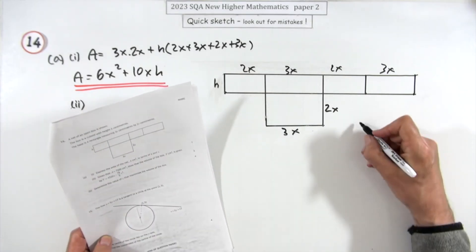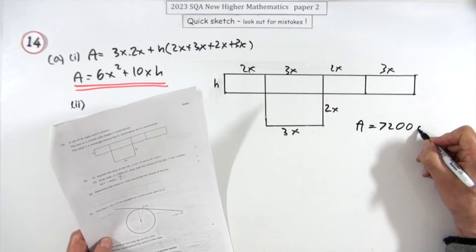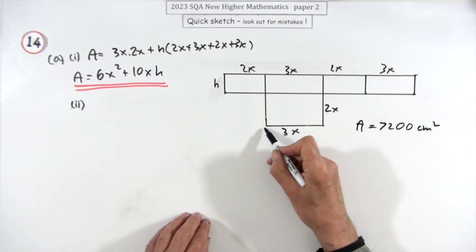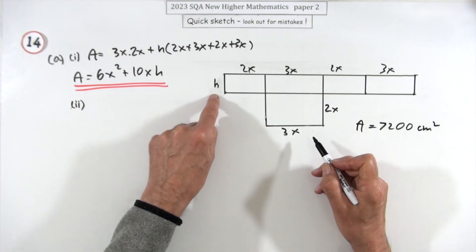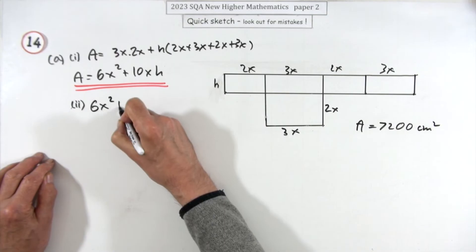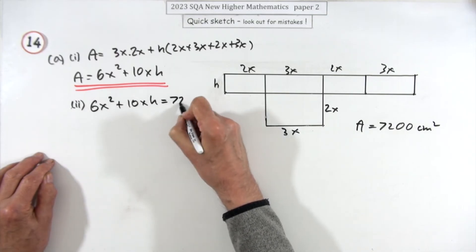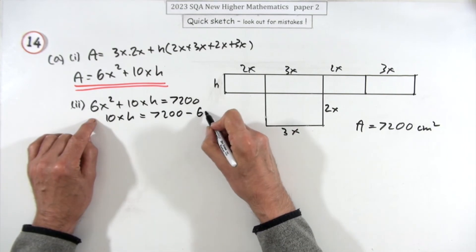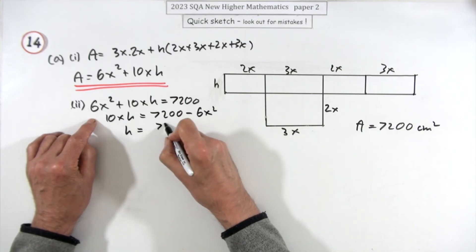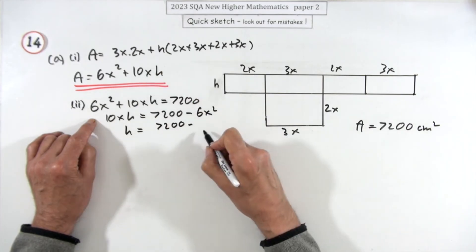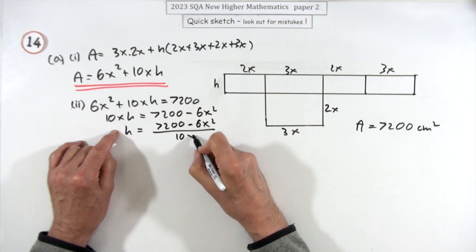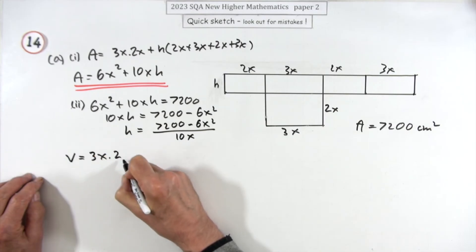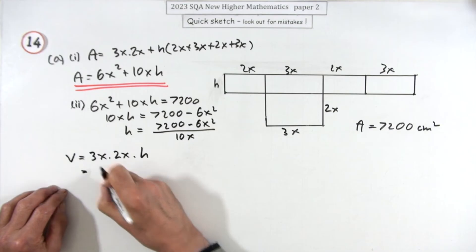Given that the area of that net is 7200 cm², we rearrange: 6x² + 10xh = 7200, so h = (7200 − 6x²) / 10x. The volume is length times breadth times height — that's 3x times 2x times h — but we want h expressed in terms of x, so we substitute that expression in.